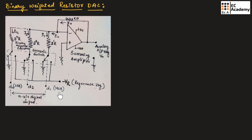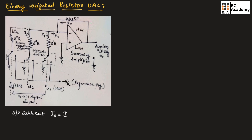D1 is considered as the MSB bit and DN is considered as the LSB bit. RF is the feedback resistor and V0 is the analog output voltage. Since we are connecting RF as the feedback resistor, the output current will flow towards the input terminal. The output current is I0, which is divided into I1, I2, up to In.